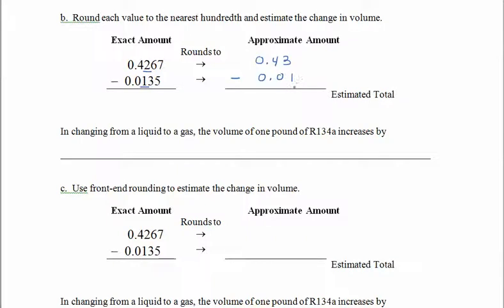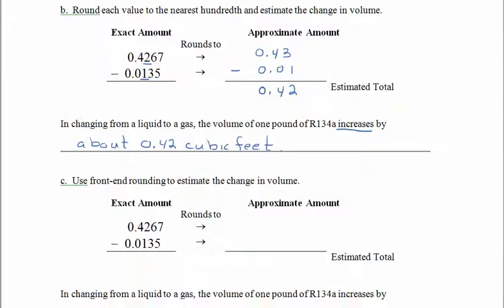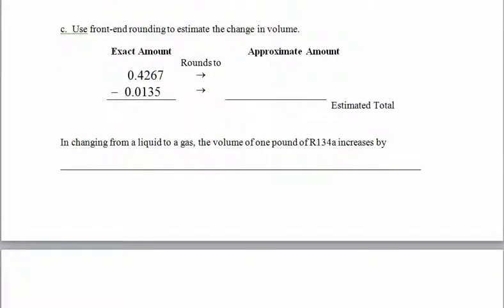See? Now the subtraction just got a whole lot easier. 0.42. So just like before, when this refrigerant changes from a liquid to a gas, the volume increases by about 0.42 cubic feet. Alright, so don't want to forget those units on there. If you said that the volume increases by about 0.42, that just even sounds weird. So rewriting your answer or thinking your answer as if it's in a sentence helps you remember the units and give somebody a complete answer. Alright, one more time. This time we're going to use front-end rounding to estimate the change in value. And this time we have a decimal.